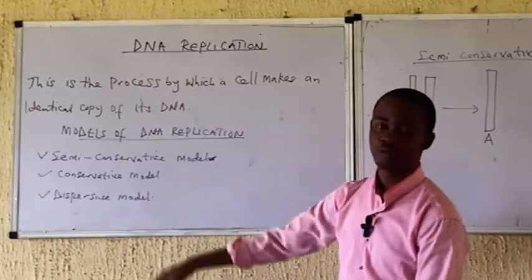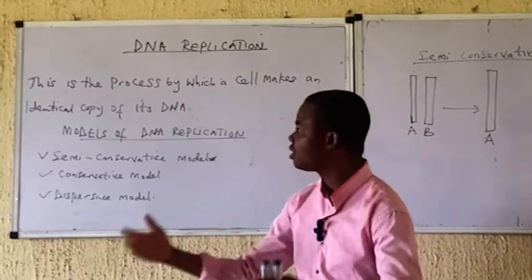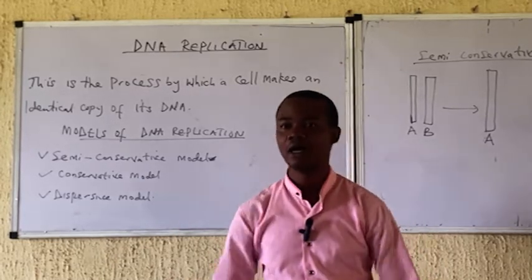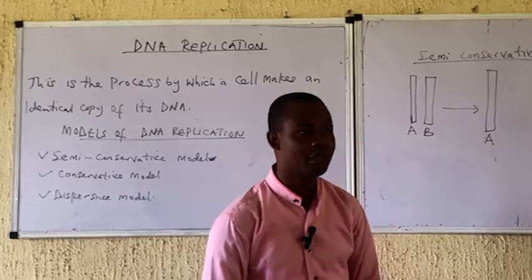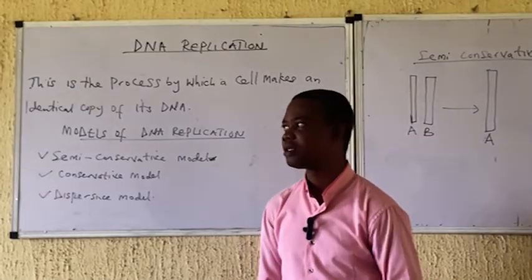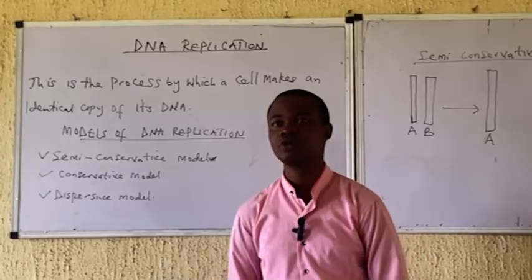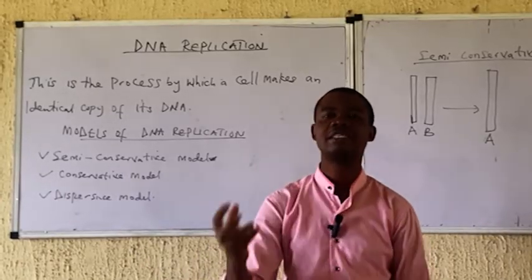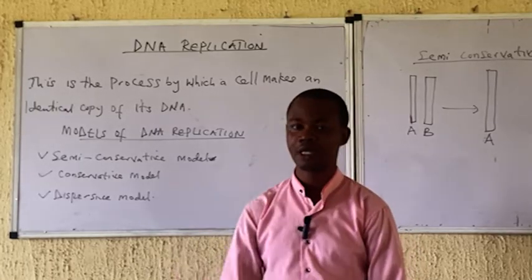Back to our topic — what is DNA replication? DNA replication is a process by which a cell makes identical copies of its DNA. As the name implies, DNA replication is a process where DNA replicates itself. This process is very important before cell division so that the daughter cells can receive the exact genetic information from the parents.